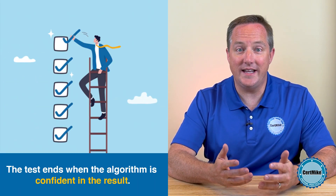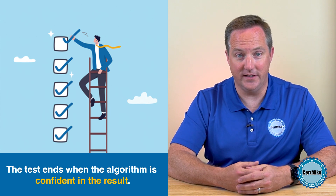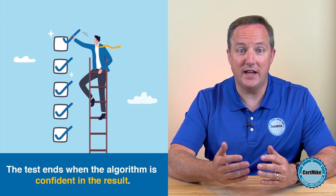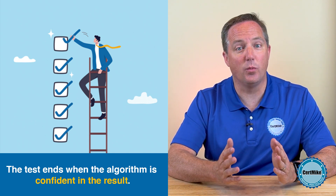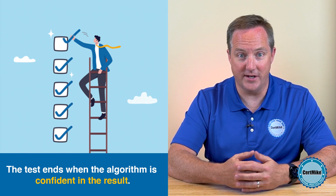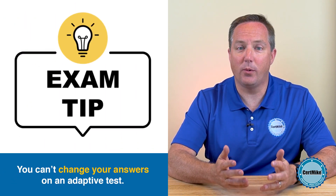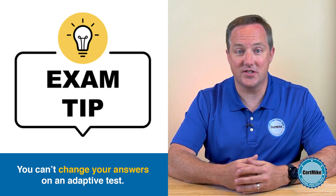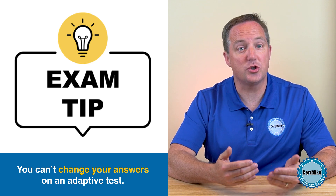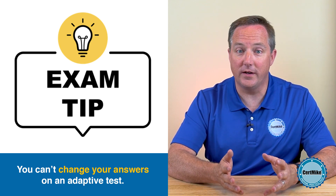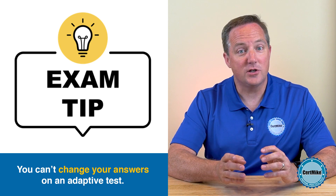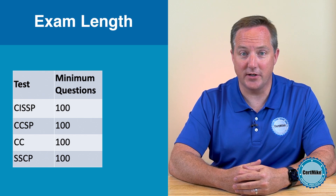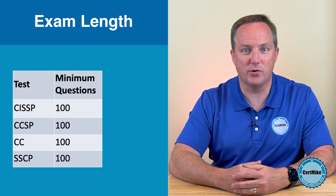The algorithm can also end the test whenever it's confident that you've passed or failed. There is a minimum number of questions you must answer. After that point, the algorithm will only ask more questions if it needs more information. In an adaptive test, you can't go back and look at previous questions or change your answers, because those questions have already been incorporated into your score — you only get one shot at every question. The CISSP exam has been using the adaptive testing approach since 2017, and it's tried and true at this point.